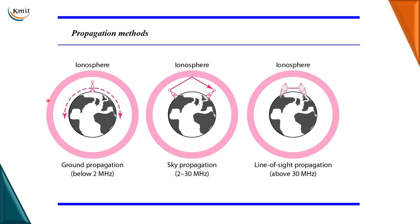In ground propagation, radio waves travel through the lowest portion of the atmosphere, hugging the earth. In sky propagation, very high frequency radio waves radiate upward towards the ionosphere, where they are reflected back to the earth. This type of transmission allows for greater distances but with low power capacity.